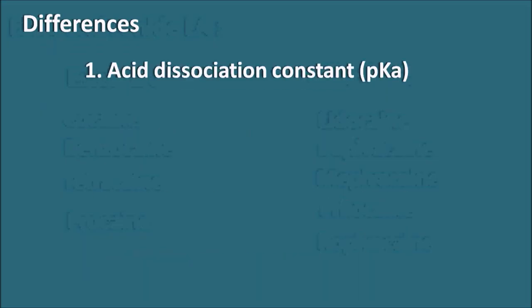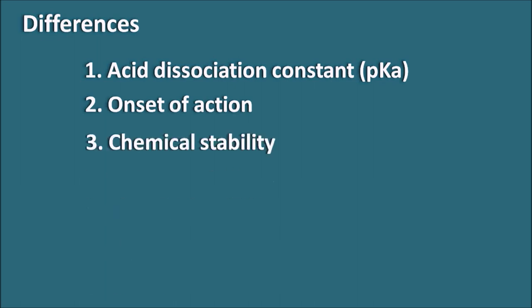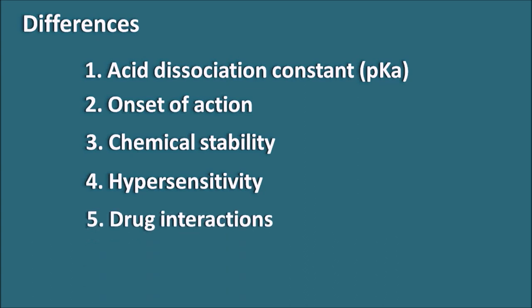Now let us see the different types of differences between ester and amide local anesthetics. The first one is the acid dissociation constant, that is the pKa value. The second one is the onset of action. The third one is chemical stability. The fourth one is hypersensitivity. The fifth one is drug interactions, and the sixth one is tissue toxicity.